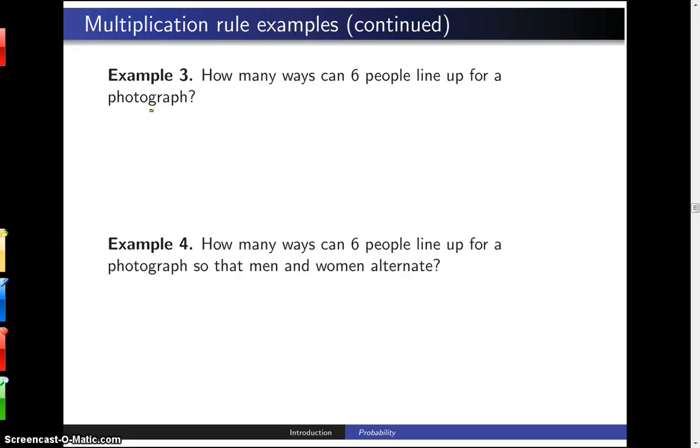Well, if you are the photographer, you have six decisions to make. The first is who to place on the far left, and then the person just to the right, and all the way until you get to the person at the far right.